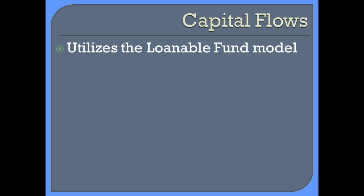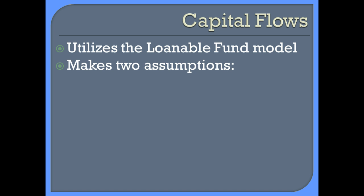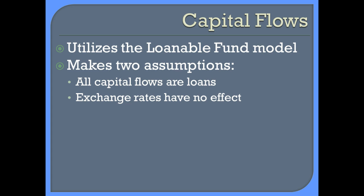Now when it comes to capital flows, what causes capital to go from one country to another? Why would one country want to invest in a different country? We can use the loanable funds model to help us understand why financial assets in one country tend to leave and get reinvested somewhere else. We'll make a couple of assumptions: one is that all capital flows are in the form of loans, and the other is that exchange rates have no effect. This is an oversimplified model, but it helps explain the general concept pretty well.